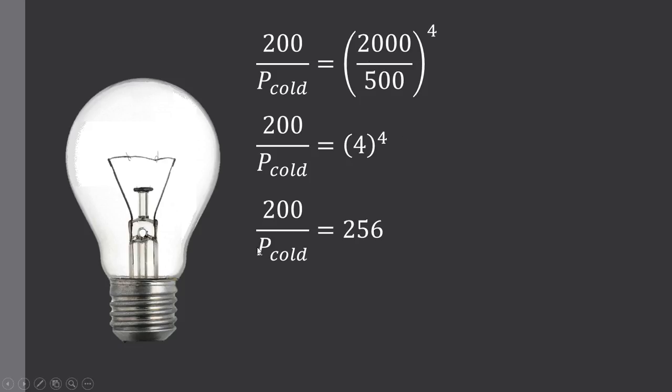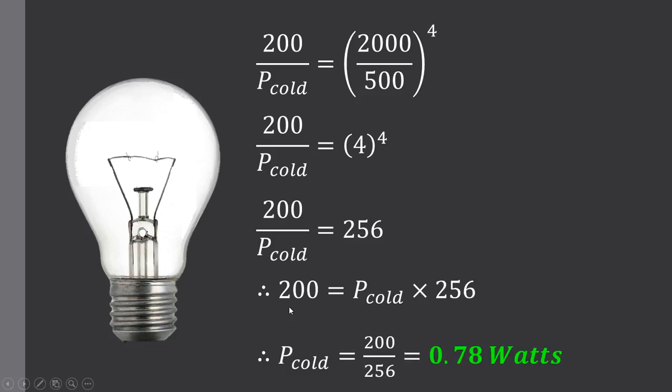Now effectively we have to multiply our P_cold across to this side and then divide both sides by 256 in terms of good mathematics. We've multiplied our P_cold across to the right hand side of the equation. And then we've divided our 256 across to the left hand side. So at 500 Kelvin the power of our light globe is only 0.78 watts. A very small fraction of the original 200 watts that existed at 2000 Kelvin. Again this is because of the rise to the power of 4.